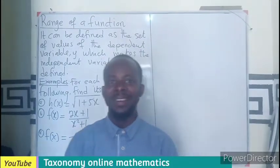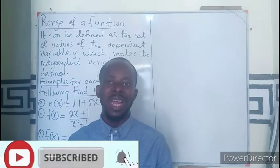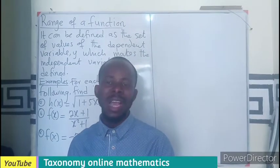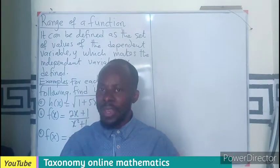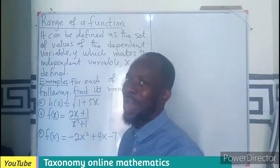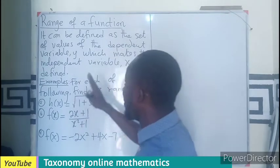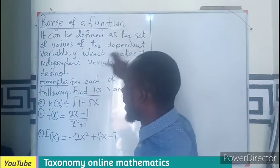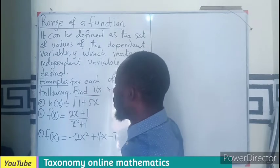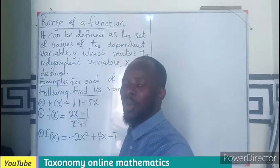Hello viewers, welcome to my channel. In this tutorial we want to talk about the range of a function, as a contribution of our series on relations and functions. We just ended an episode where we dealt with how to find the largest possible domain. We also mentioned that the range is just a subset of the codomain. So now, how do we find the range from a given function? We are looking for the set of values of y that make the expression of x to be defined.